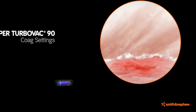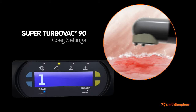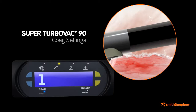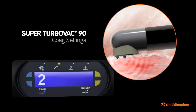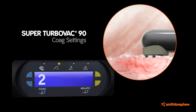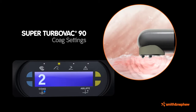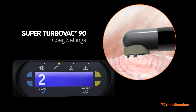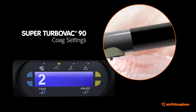All coablation wands can operate in coag mode for hemostasis. At lower settings, with minimal formation of plasma and its insulation, the current flows through the tissue. Blood vessels within the tissue are coagulated, stopping their bleeding during a surgical procedure.